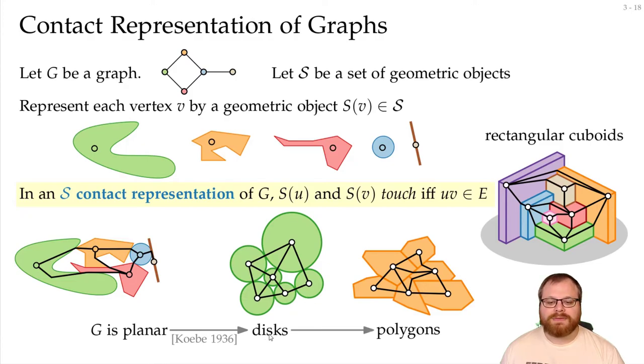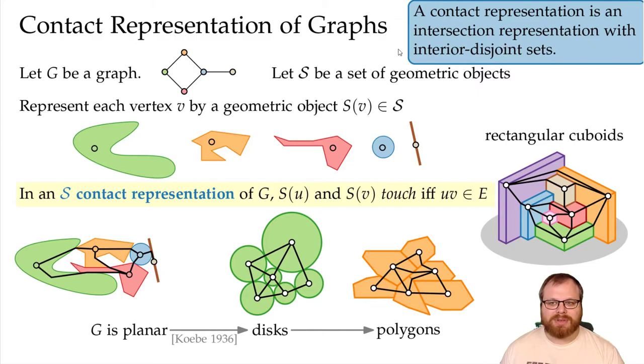And from disks, it follows almost immediately that you can also do it with polygons, because we can approximate those disks and make sure that we still have those touching points, and then we get a representation like this. So we have a special case of intersection representations, where we have interior disjoint sets, and we can do all planar graphs with disks or with polygons.